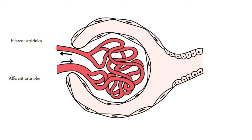The glomerulus capillary filters blood with a simple trick. The diameter of the incoming arterioles is wider than the diameter of the efferent arterioles by which blood leaves the glomerulus. So space becomes narrower suddenly, and this creates a pressure which forces water, salt, urea, glucose, etc. out of the capillary into Bowman's capsule.